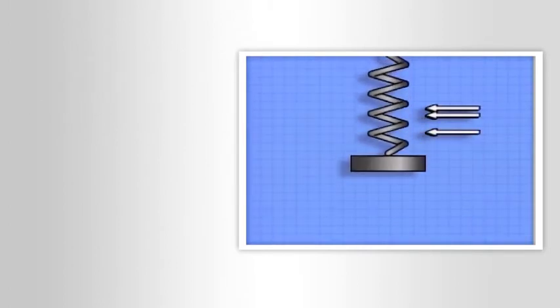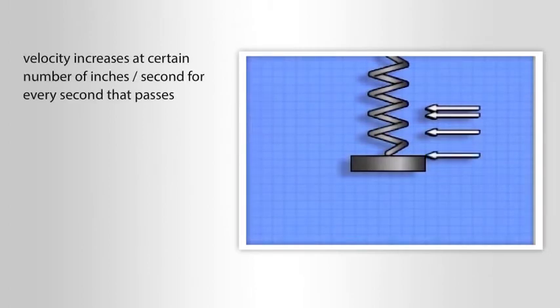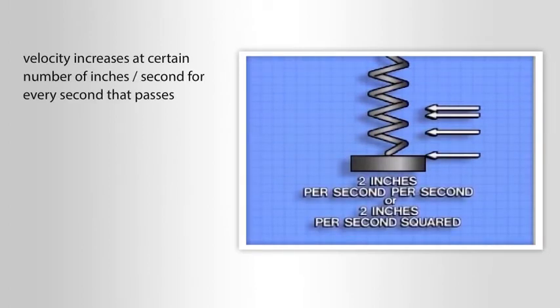Inches per second squared means that an object's velocity increases at a certain number of inches per second for every second that passes.